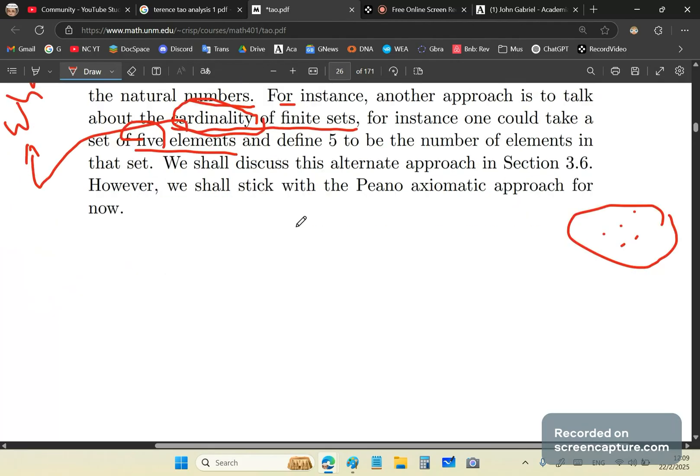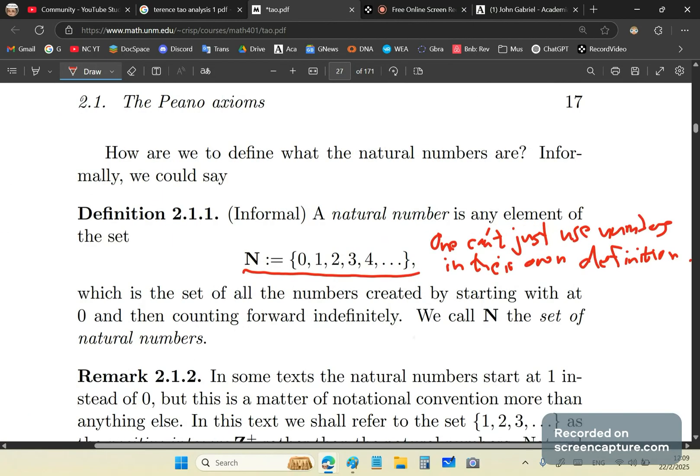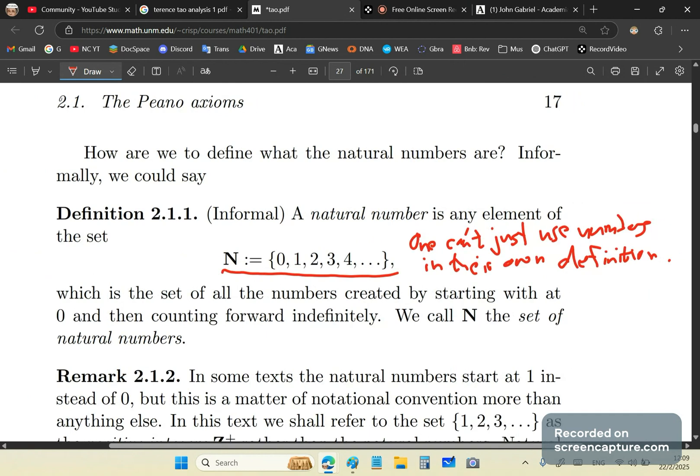We shall discuss this alternate approach, but however, we shall stick with the Peano axiomatic for now. So then he comes down here and he says, here's the definition of natural number, by the way. You cannot use numbers in their own definition. You moron. These are numbers. They mean something, but he's using them in their own definition. So in mainstream mathematics, circularity works because circularity works. Their entire reasoning processes are a sewer of crap.